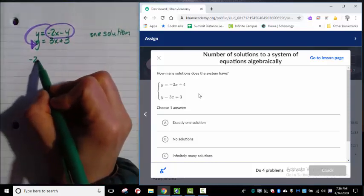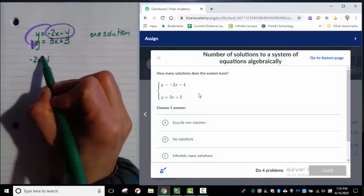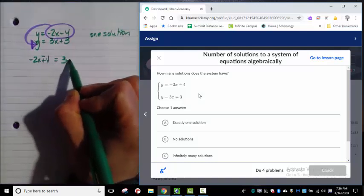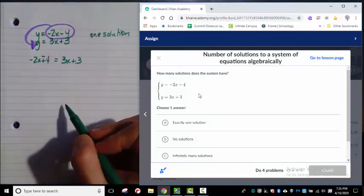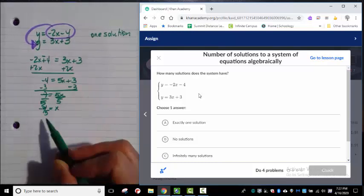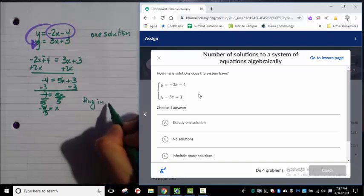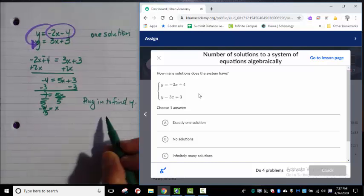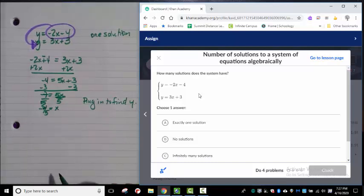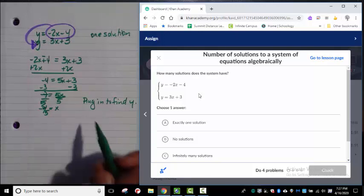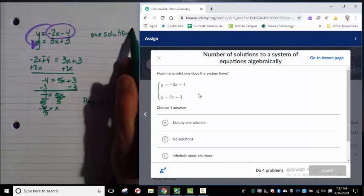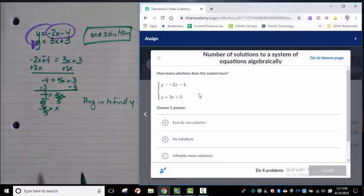Now I've got negative 2x plus 4, oh sorry, minus 4, equals 3x plus 3. And when I go to solve this, x equals negative 7 fifths. And I can just plug in to find y. But I don't actually need to for this problem. Because what I know is that there's going to be just one solution. If it asks me for the solution, I'd have to find it. But for this one, I can just say, this is going to be exactly one solution.